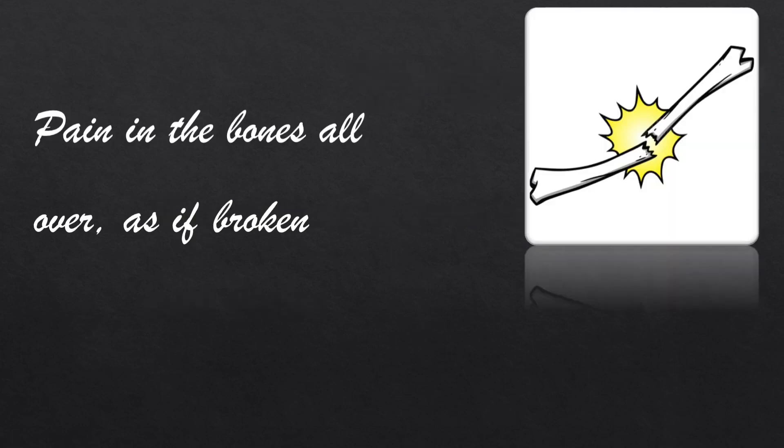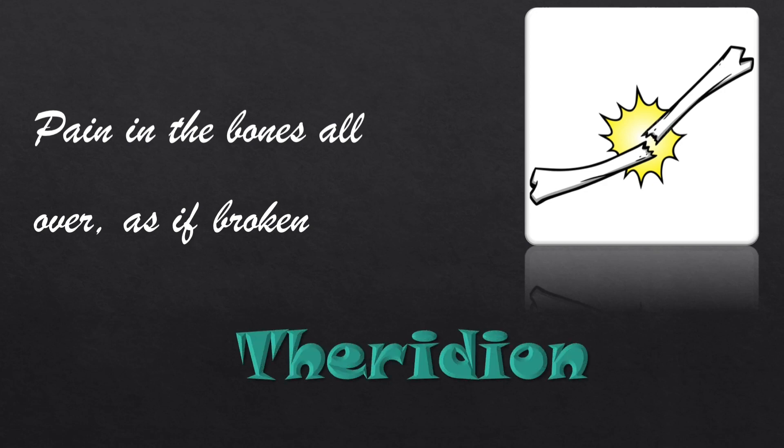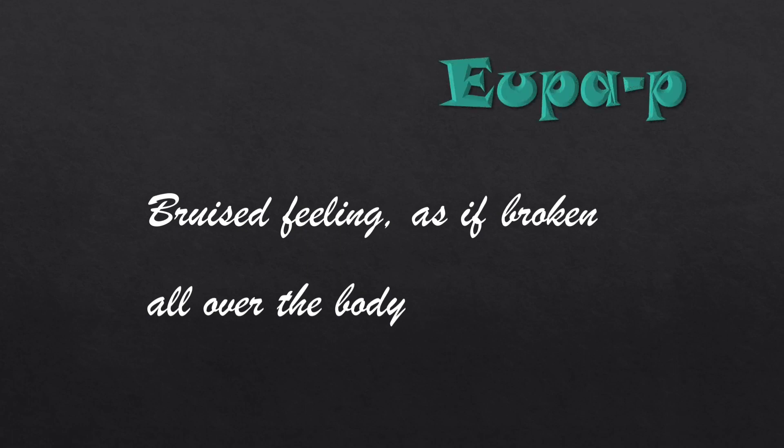Next symptom: pain in bones all over as if broken — this is Theridion, which is similar to the symptom of Eupatorium perfoliatum. How do we differentiate? Eupatorium means bruised feeling as if broken all over the body. So bruised feeling is the extra differentiating factor.